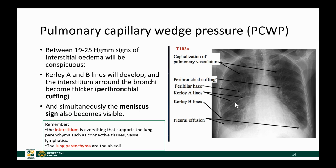Kerley A lines are thicker and they go from the center to the periphery, but they never reach the periphery. Kerley B lines are 1 to 2 centimeters long, perpendicular to the pleura, and quite thin. And of course you will see the meniscus sign of pleural effusion.